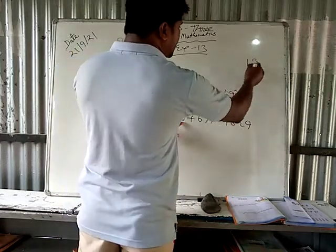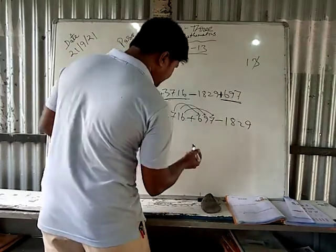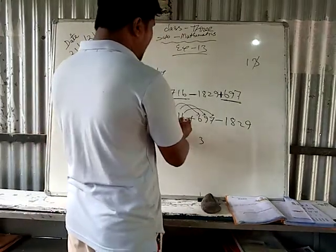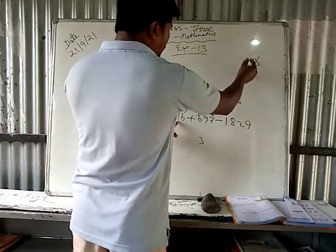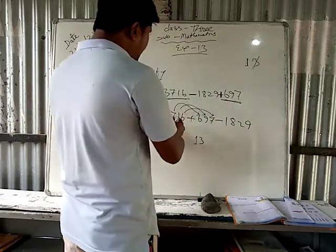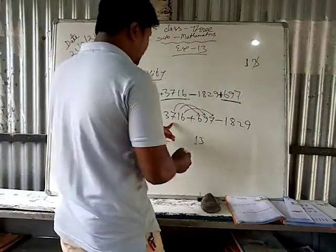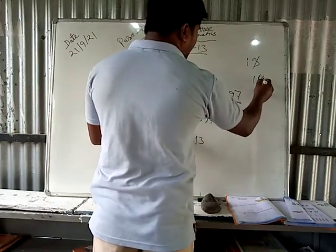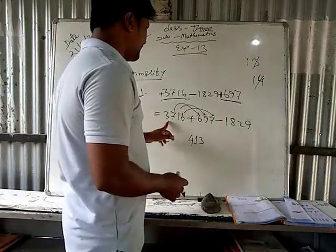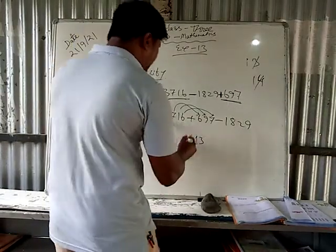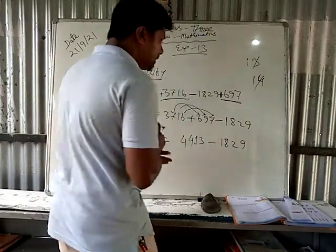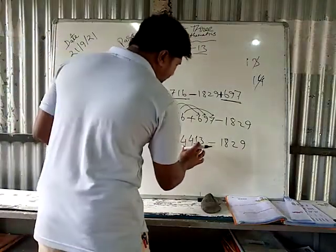Six and seven is 13, so three is here and one is carried. Now one and nine and one is eleven, so one is here and one is carried. Now seven and six is thirteen, and one carried makes fourteen, so four is here and one is carried. Now three and one carried is four. So 3716 plus 697 equals 4413. Now from 4413 we have to subtract 1829.